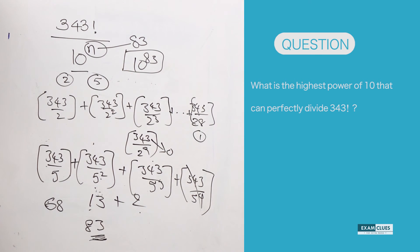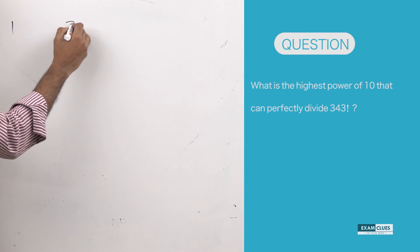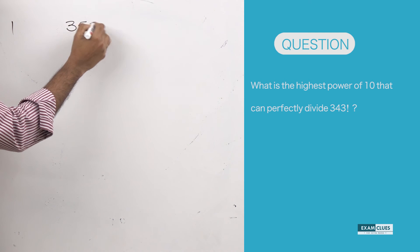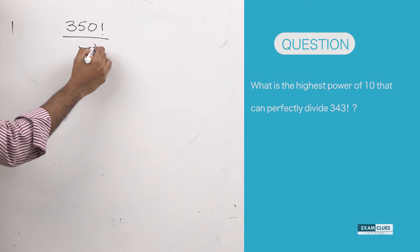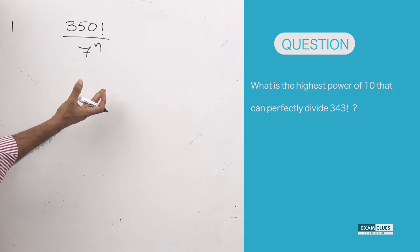I'd like to give you another example so you understand this concept better. What is the highest power of 7 that can divide 350 factorial? 7 is already a prime number, so I don't need to worry about factors.